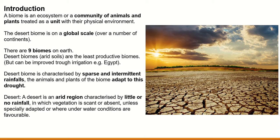So what is a desert? A desert is an arid region — again, an extremely dry region with no moisture. A desert is an arid region characterized by little or no rainfall in which vegetation is scant or absent. Scant means there is very little of it or none whatsoever — unless specially adapted, or where water conditions are favorable. Vegetation can only grow if it has a special adaptation, which we'll look at later on, or where there is some water. Sometimes you might find a small spring or lake in some deserts, but it's extremely rare.